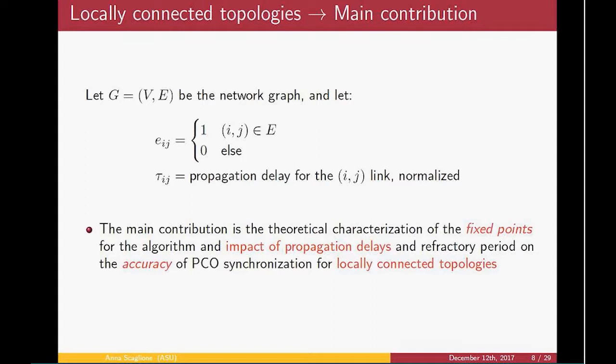First of all, there are propagation delays, so the signals are not received instantaneously. Also, we want to assume that there is a certain network which is locally connected. I wish to remark that this is actually a non-directed network. So we will use this notation where E_ij, the coordinate vector, marks whether the (i,j) pair is one particular edge in the network. And τ_ij is the normalized delay. The assumption here is that the propagation delay is less than the duration of the cycle.